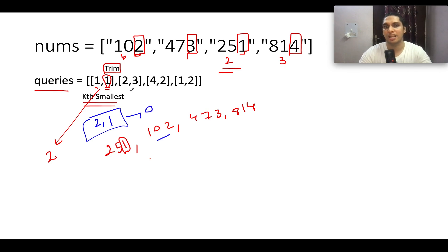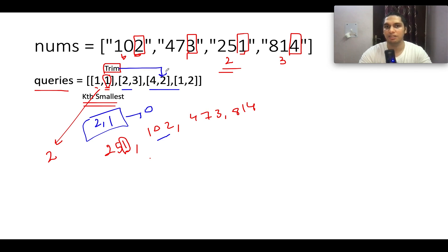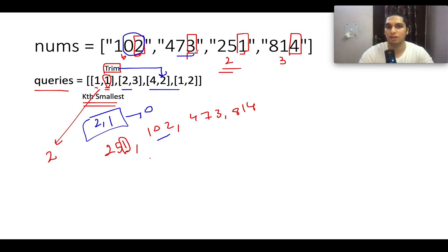Let's proceed ahead and understand a few more queries. Here the trim value is 2, which means we consider 2 digits starting from the rightmost one. So from 102 we consider 02, from 473 we consider 73, from 251 we consider 51, and from 814 we consider 14. These are the substrings used while sorting the elements.